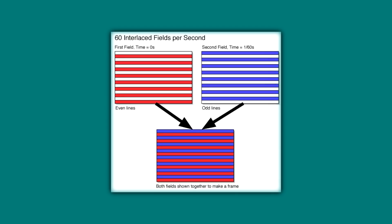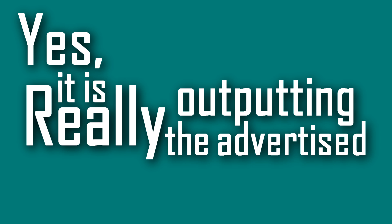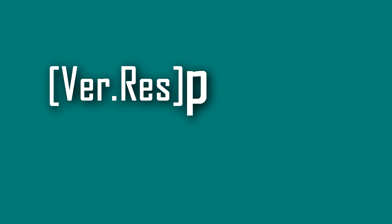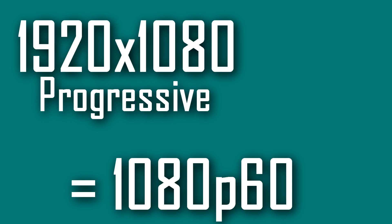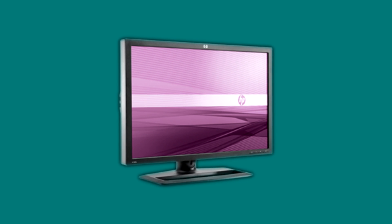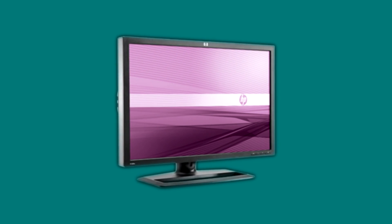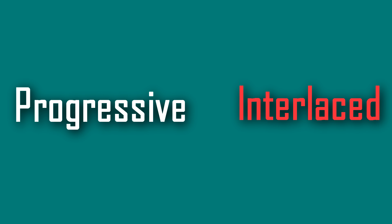Progressive is where the full frame is displayed at once, so yes, it is really outputting the advertised frame rate. It is written as the vertical resolution followed by a lowercase 'p' and then the frame rate — so a 1920x1080 video at 60fps will be written as 1080p60. This scan type is in anything from mobile phones to TVs. Every IPS panel makes use of progressive, and pretty much every modern monitor has the bandwidth to handle it, so it ultimately obsoleted interlaced.